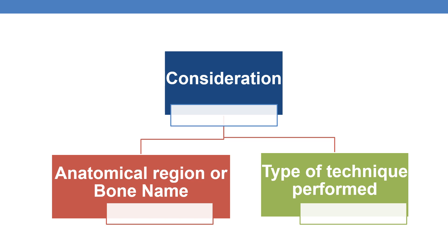Before assigning any radiology CPT, we must take into consideration two points. The first is the anatomical region or body region, and secondly, if any bone is involved, the name of the bone. The next point is the type of technique performed. Based on these two factors, we must assign the code.